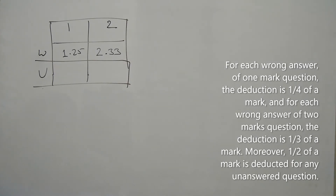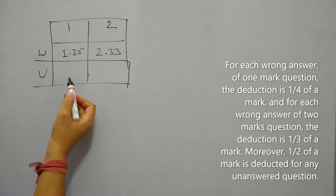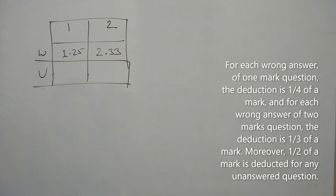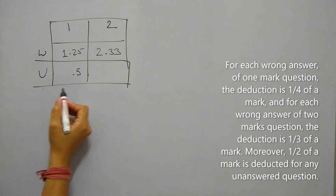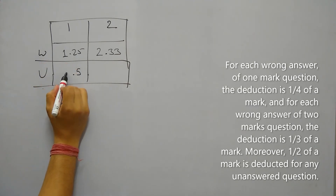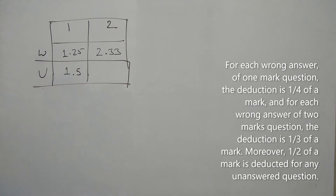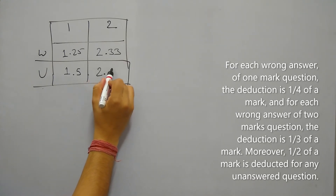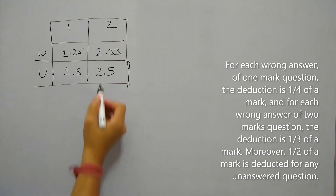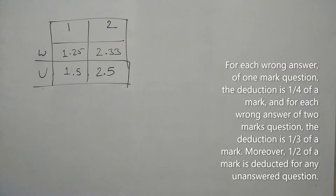Then the question says that half a mark is deducted for any unanswered question. So irrespective of whether it is a 1-mark or 2-mark question, if it is not answered, then 0.5 will be deducted as penalty. For a 1-mark question, the student will lose 1.5 in total. Similarly, for a 2-mark question, the penalty is 0.5 and the question is of 2 marks itself.